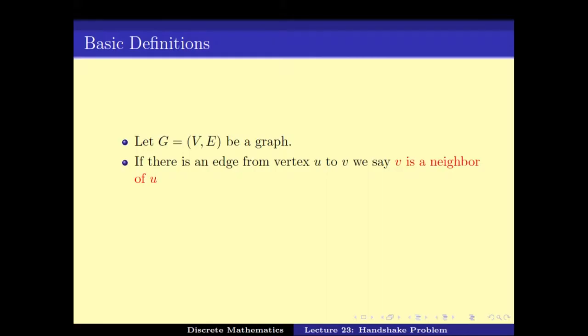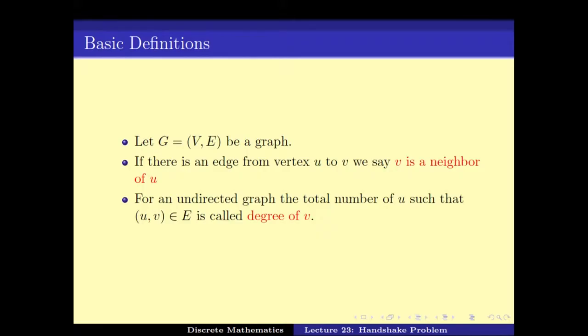If there is an edge from U to V, we say that V is a neighbor of U. In an undirected graph, the number of neighbors of V is called the degree of V. This is the number of edges that go out of or into V — since it is undirected, they are the same. These are the basic definitions we have.